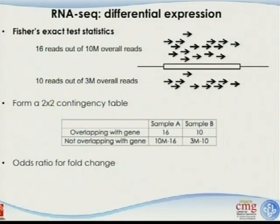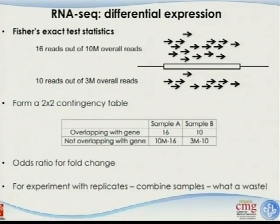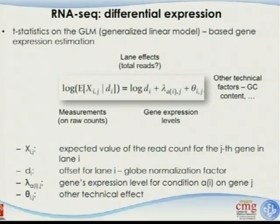For fold change — how much different the expression level is — you can calculate the odds ratio. For experiments with biological replicates, what people do is combine the samples, but this is really a waste because you are not taking advantage of the distribution of the data at all. A better approach is to do t-statistics on a generalized linear model-based gene expression estimation.